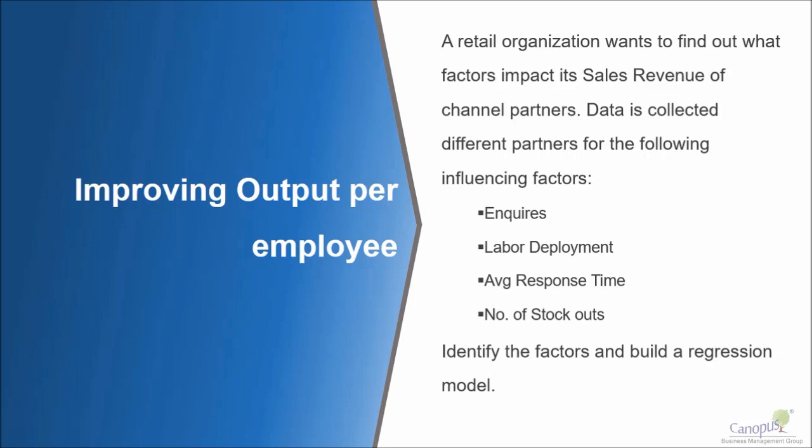Let's take this example of how a retail organization wishes to improve its sales revenues — specifically the sales revenues of channel partners. Indirectly, they want to increase the output per employee.